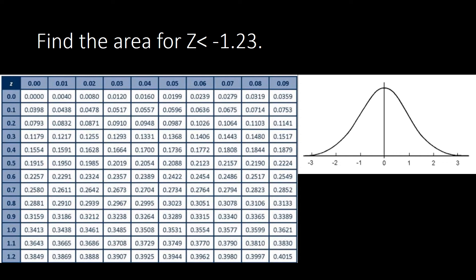Hello, this is your teacher Jenny. Join me for another discussion on finding the area for the normal distribution. Here we have an example: find the area for z less than negative 1.23. If we illustrate that on our normal distribution, we locate negative 1.23, and since it is 'less than,' the shading of the area will be going towards the left side.